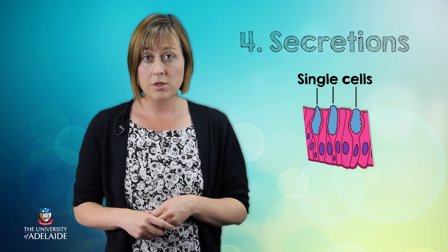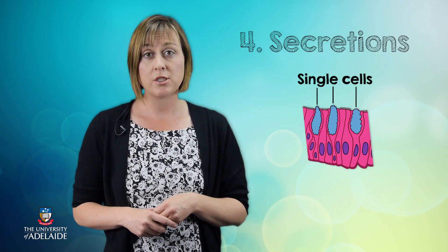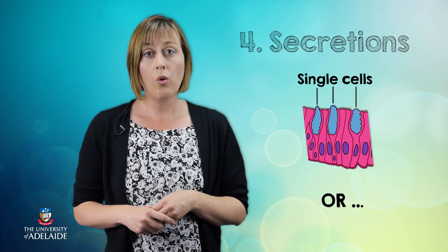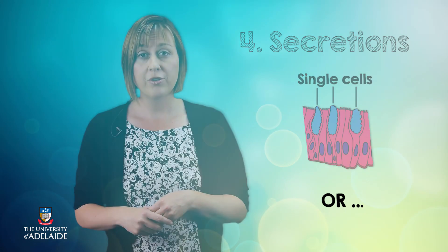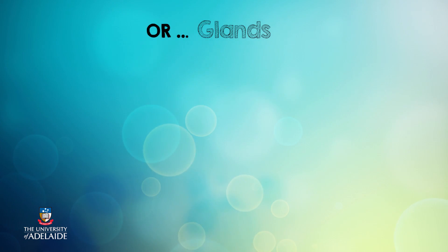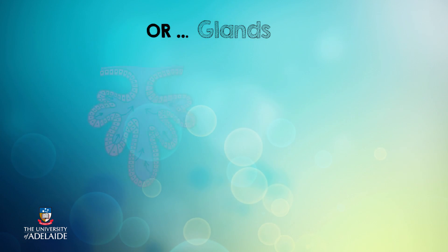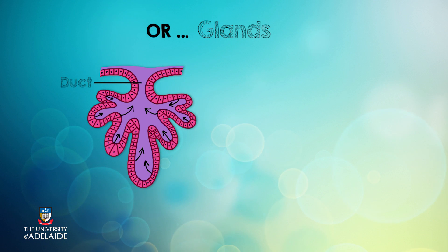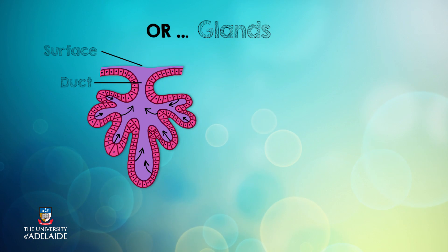Some epithelial cells are highly specialised and are capable of producing secretions. These can be single cells producing secretions, or more often, these secretory cells form epithelial glands. These secretions are able to be released into ducts and then discharged onto the surface of the epithelium.